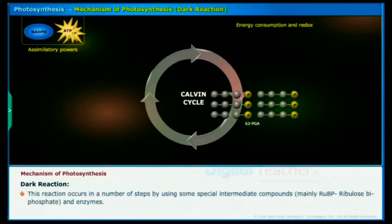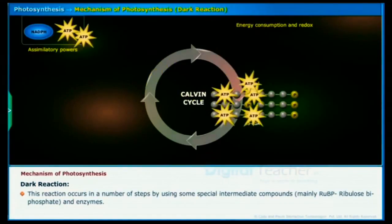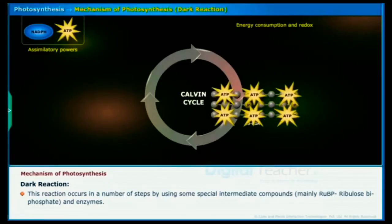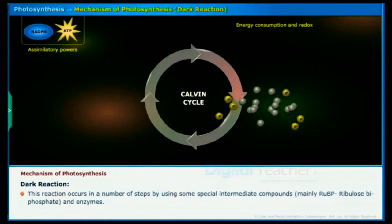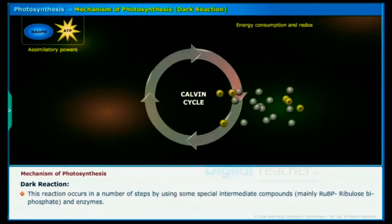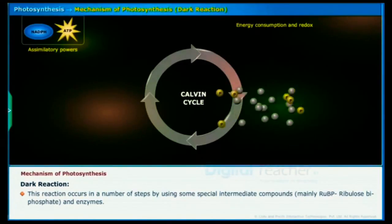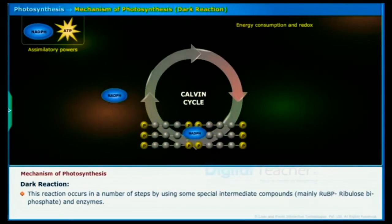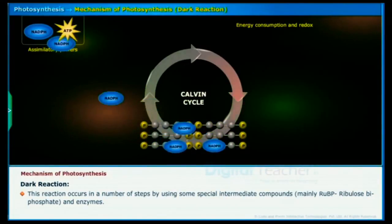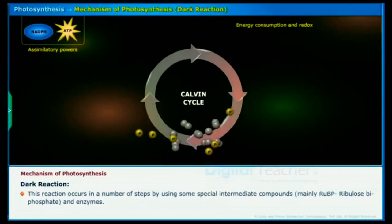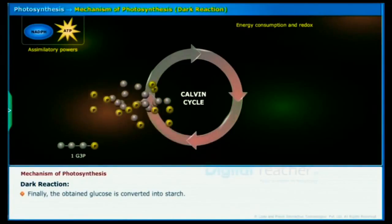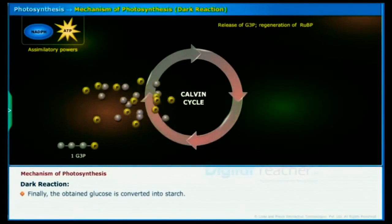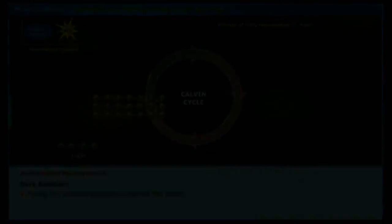This reaction occurs in a number of steps by using some special intermediate compounds, mainly RUBP (ribulose bisphosphate) and enzymes. Finally, the obtained glucose is converted into starch.